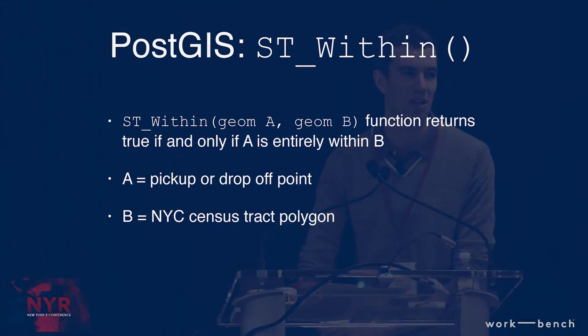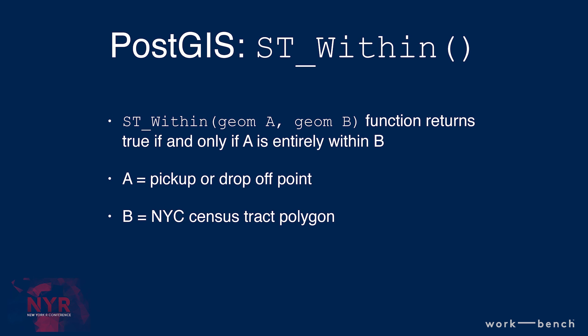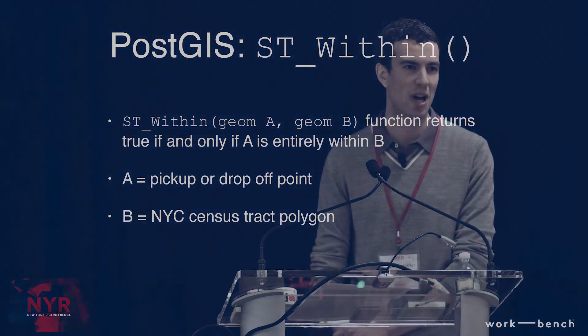PostGIS has a function called stWithin, which takes two geometries A and B and returns true if and only if A is entirely within B. In our example, A is the pick-up or drop-off point, and B is the tract polygon. For each trip, you ask: is it within each of the 2,000 polygons? That should only be true once, since they don't overlap — or zero times if the trip was outside New York City.